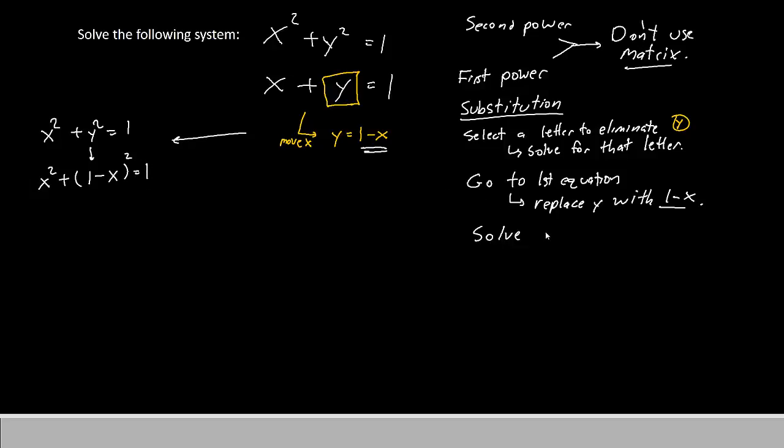Our next step will be to solve the equation we just wrote. Let's try to simplify first. When you have a binomial squared, you have to FOIL it. So you'll have x squared plus 1 minus x times 1 minus x equals 1. Let's FOIL this together. We'll still have x squared plus 1 times 1 is 1. 1 times negative x is minus x. Minus x times 1 is another minus x. And negative x times negative x gives plus x squared, and then the equal sign, and then 1.